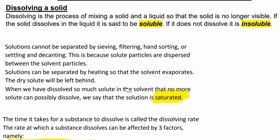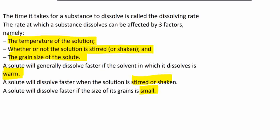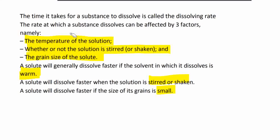When we have dissolved so much solute in the solvent that no more solute can possibly dissolve, we say that the solution is saturated. If we keep dissolving sugar in tea, it will reach a point where the sugar will not dissolve anymore — the tea is saturated with sugar. The time it takes for a substance to dissolve is called the dissolving rate. The rate at which a substance dissolves can be affected by three factors: the temperature of the solution — the warmer the tea, the faster the sugar dissolves; whether or not the solution is stirred or shaken — the more we stir, the faster it dissolves; and the grain size of the solute — if we use sugar powder instead of sugar crystals, it dissolves faster.